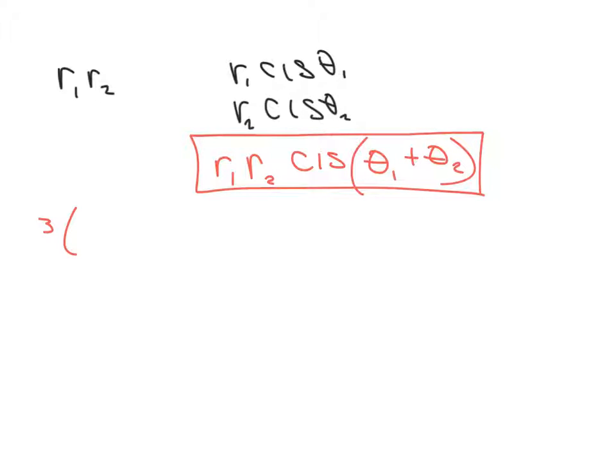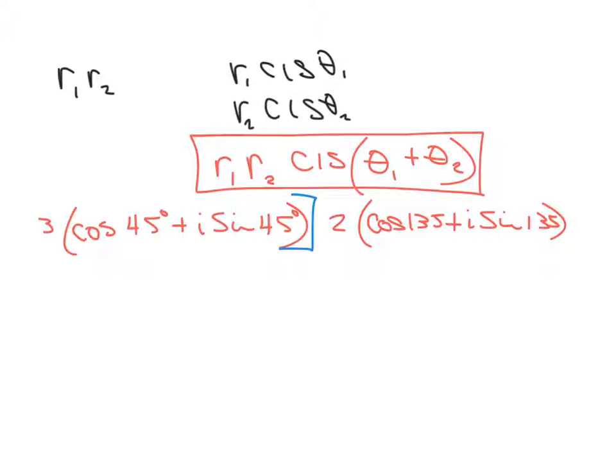If I have 3 times the cosine of 45 degrees plus i sine of 45 degrees, and I'm multiplying that by 2 times cosine of 135 plus i sine of 135, that's example 1. Here's how we multiply them. Let's put braces around here so we know that the 3 and 2 are included. We take our r1 and r2 and multiply them.